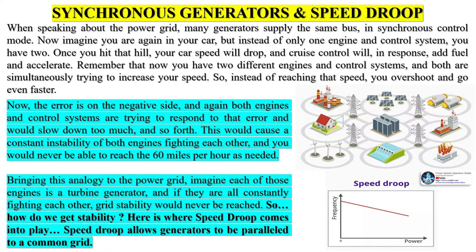When speaking about the power grid, many generators supply the same bus in synchronous control mode. Imagine you are in a car, but instead of only one engine and control system, you have two. Once you hit a hill, your car speed will drop, and cruise control will, in response, add fuel and accelerate. Now with two different engines and control systems, both are simultaneously trying to increase your speed. Instead of reaching the target speed, you overshoot and go even faster.